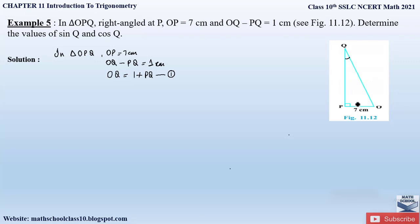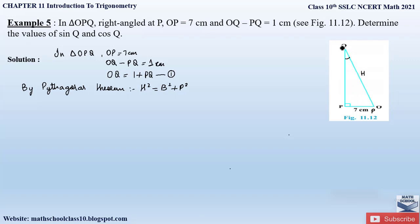Now let us apply the Pythagorean theorem to right-angle triangle OPQ so that we can find out all three side values. By Pythagorean theorem: hypotenuse squared is equal to base squared plus perpendicular squared. Here our hypotenuse is OQ, as it is opposite the right angle. OP is our perpendicular, as it is opposite the acute angle Q, and QP is the base.